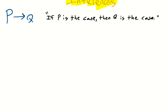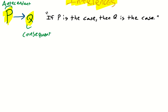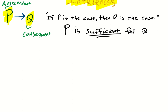If p is the case, then q is the case. Notice that nothing is being affirmed or denied here — we're not told that p is the case, and we're not told that p is not the case. Likewise, we're not told whether q is the case or not. We're only told that if p is the case, then q is the case. We call p the antecedent and q the consequent, where p, the antecedent, is sufficient for q, the consequent. In other words, p is sufficient for q, however it is not necessary for q — other things might bring about or cause q.